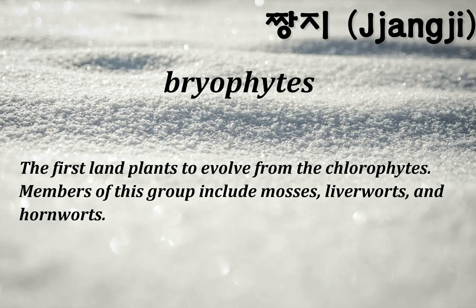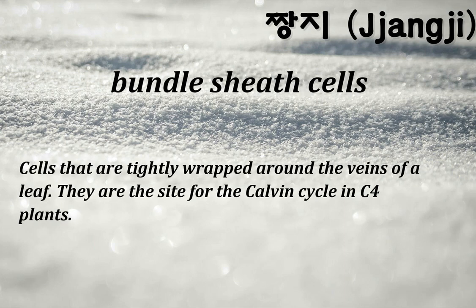Bryophytes: the first land plants to evolve from the chlorophytes. Members of this group include mosses, liverworts, and hornworts. Bundle-sheath cells: cells that are tightly wrapped around the veins of a leaf; they are the site for the Calvin cycle in C4 plants.